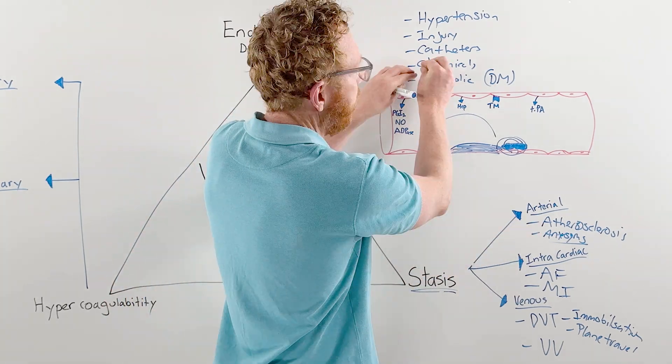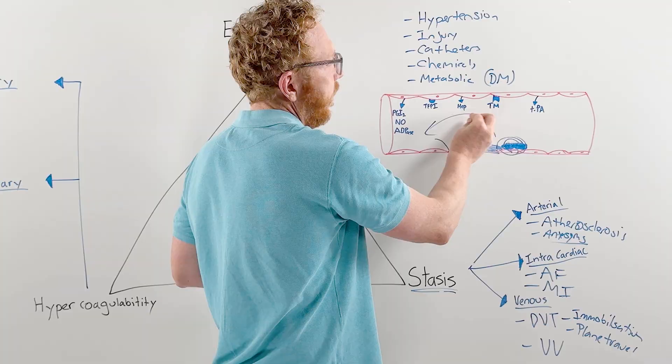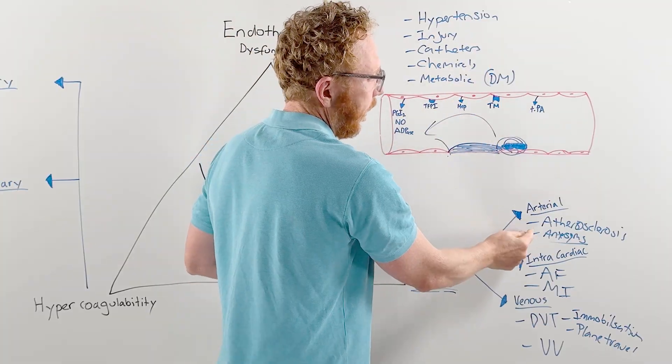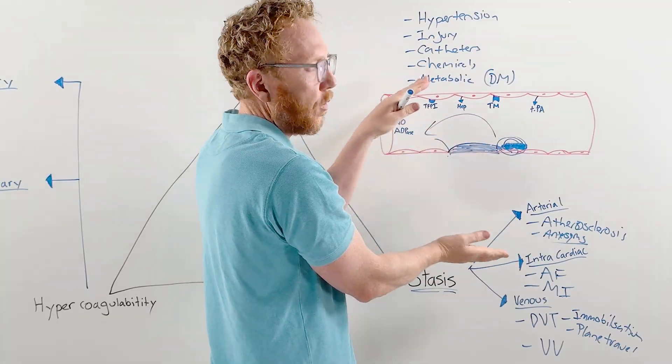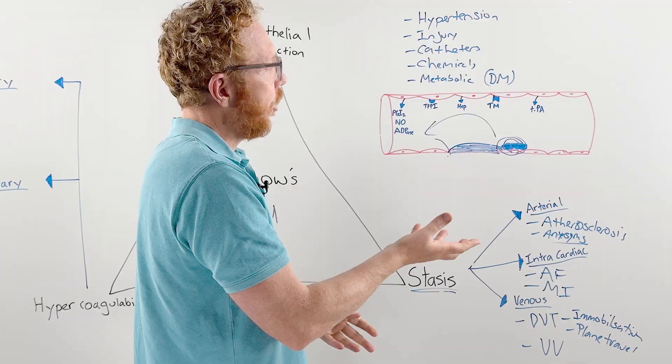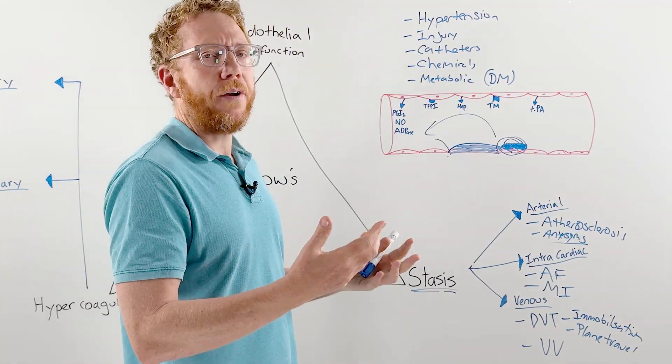These are examples where stasis can start to lead to the possibility of a clot forming. You can see how some of them work together, where conditions with hypertension and injury can lead to atherosclerosis. Once you start to put multiple factors together, the chances of clot forming become higher and higher.